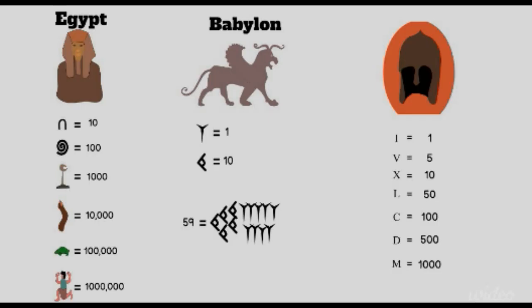Egyptian symbols included a stroke for one, a horseshoe for ten, a coil for a hundred, a water lily for one thousand, a finger for ten thousand, a toad for one hundred thousand, and a kneeling servant for one million.